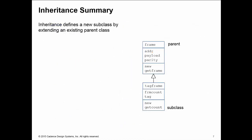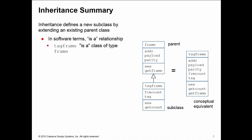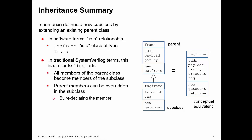This is a quick overview on inheritance. Remember, inheritance is where you define a new subclass by extending the existing parent class. In software terms this is referred to as an is-a relationship. TagFrame is a class of type frame but is also adding its own members on top of those from the parent frame class.